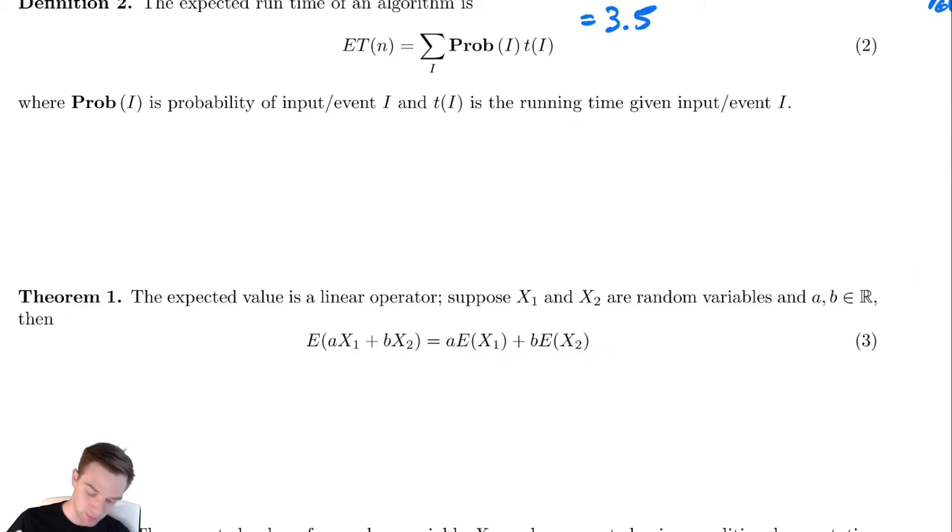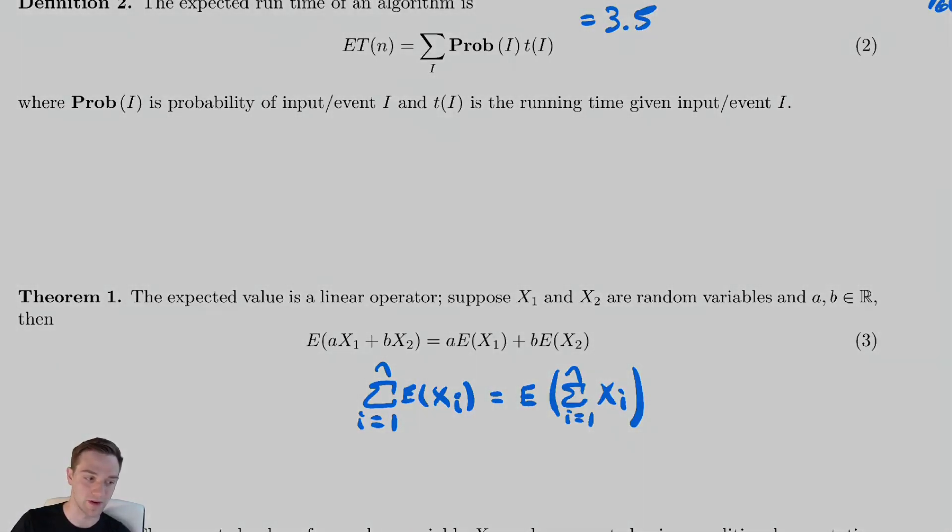This is a convenient property. In particular, we're going to use it in the more generalized form. If you had added up n of these, you can factor the expectation value out of the summation, and vice versa. We'll use this several times while we're analyzing our various algorithms.